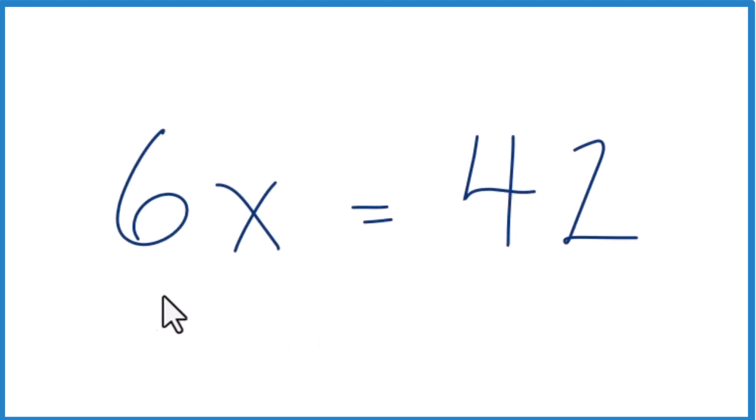In this video, we'll solve for x. We have 6x equals 42, and we want to isolate x, get x all by itself.